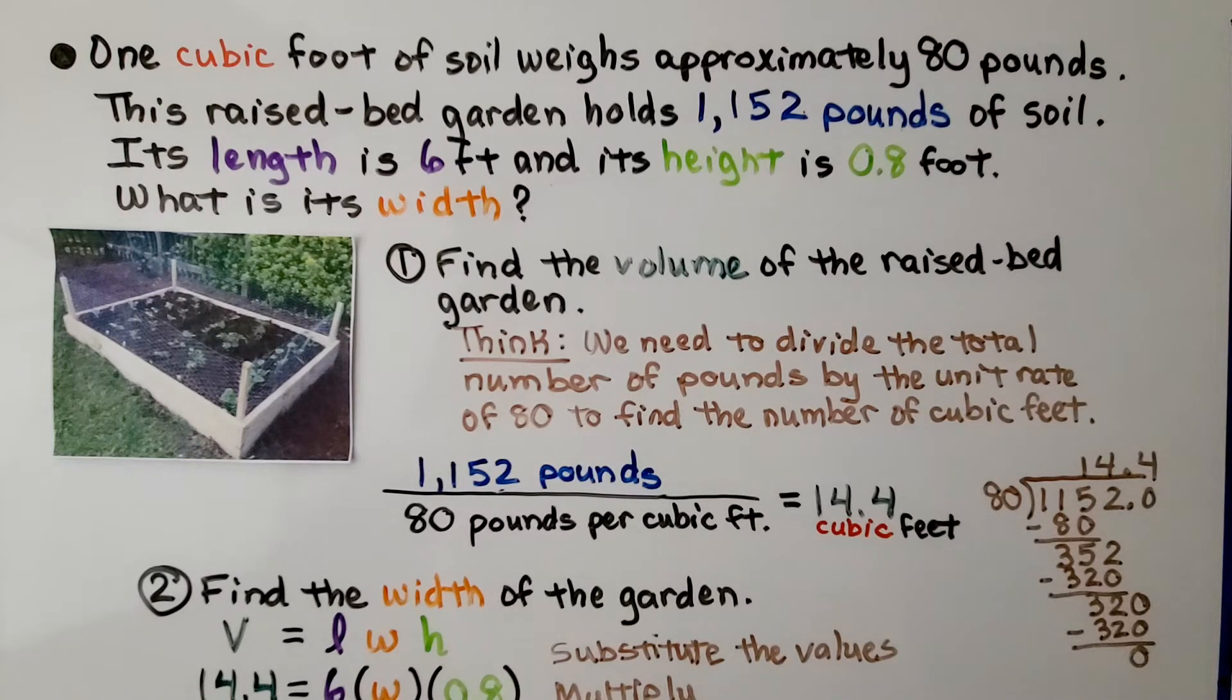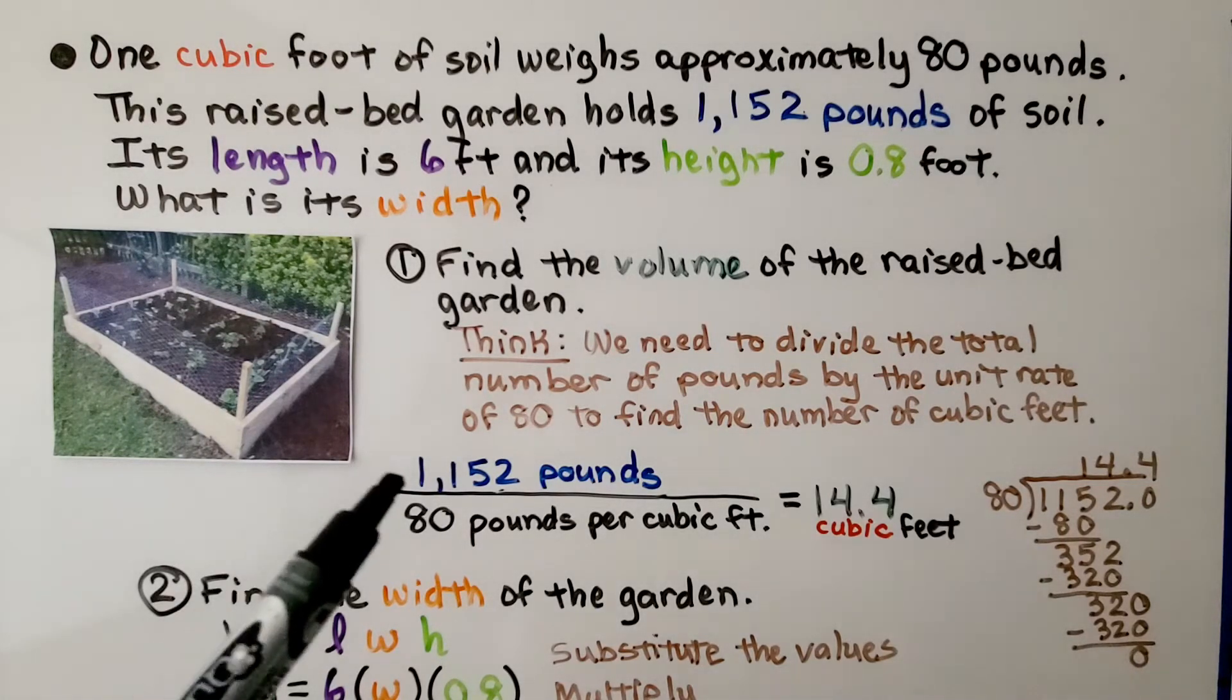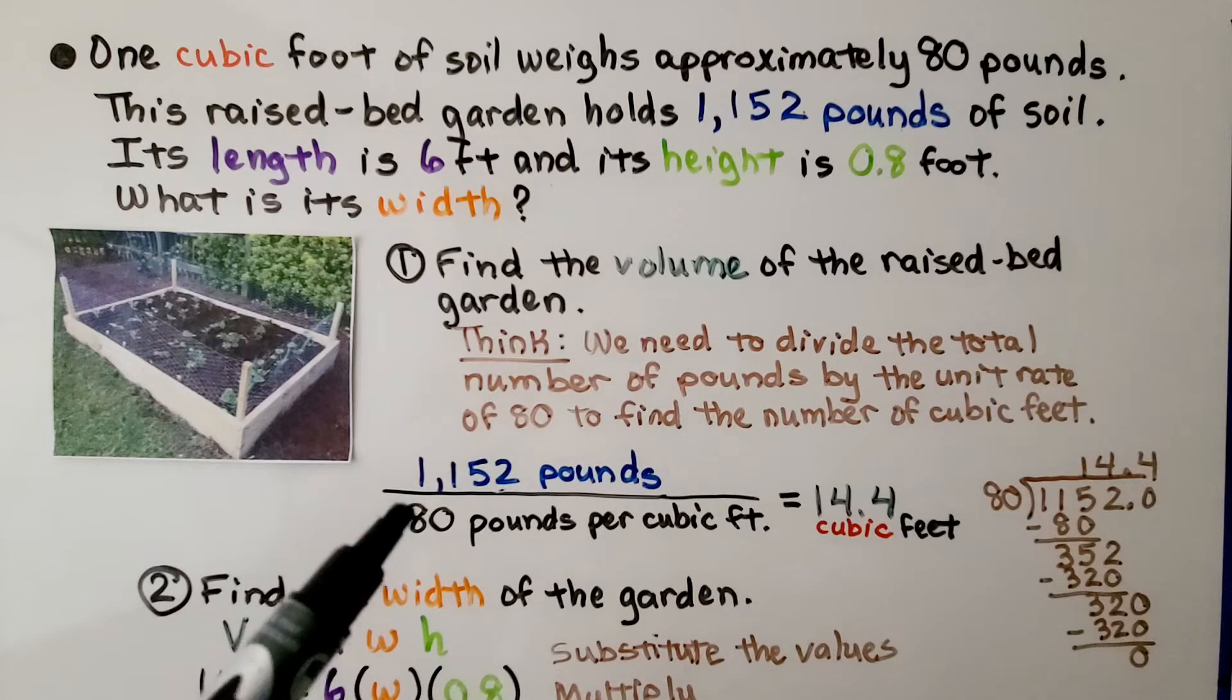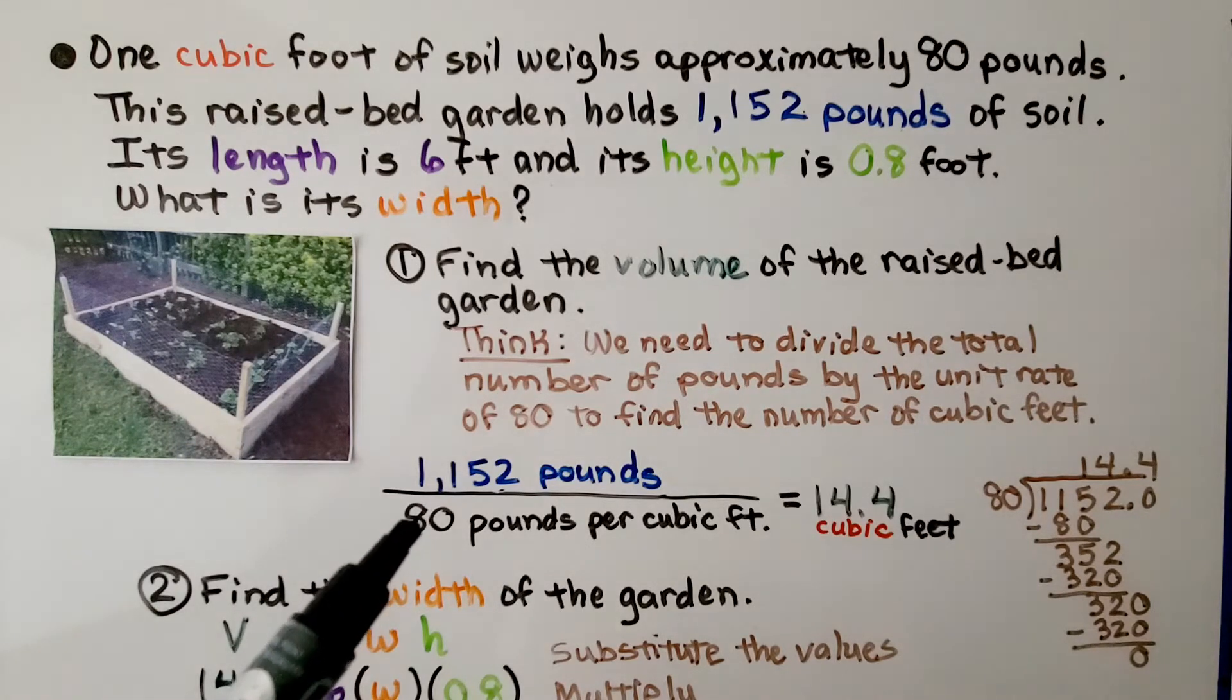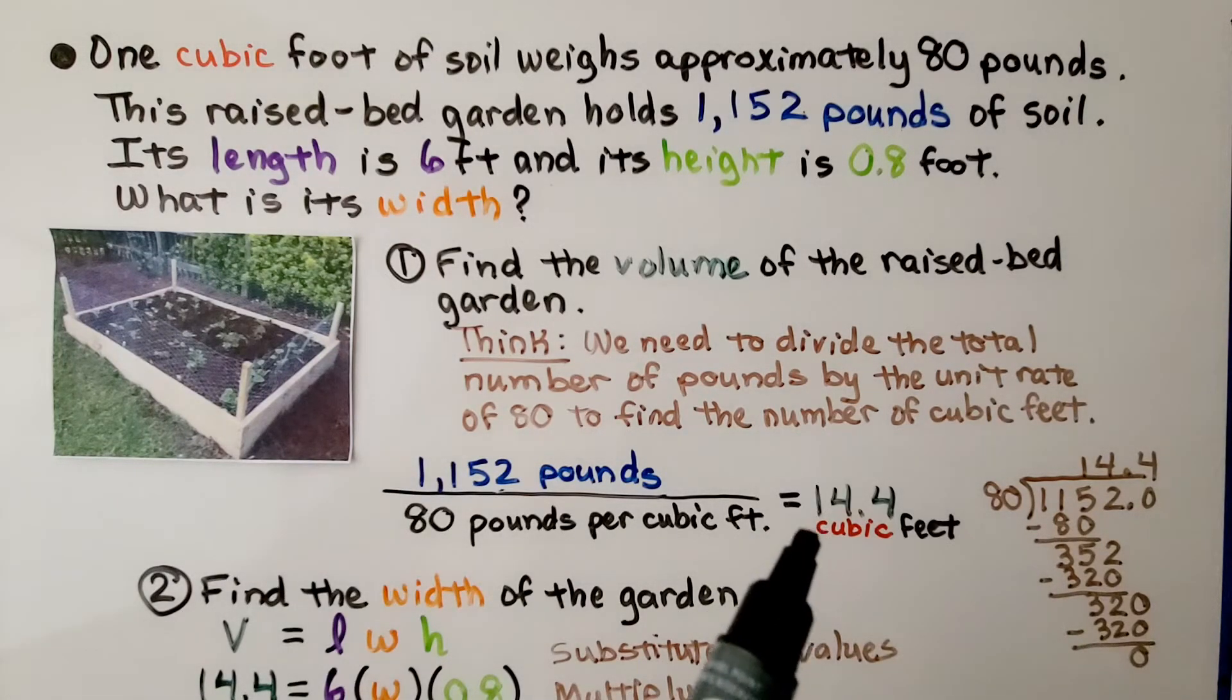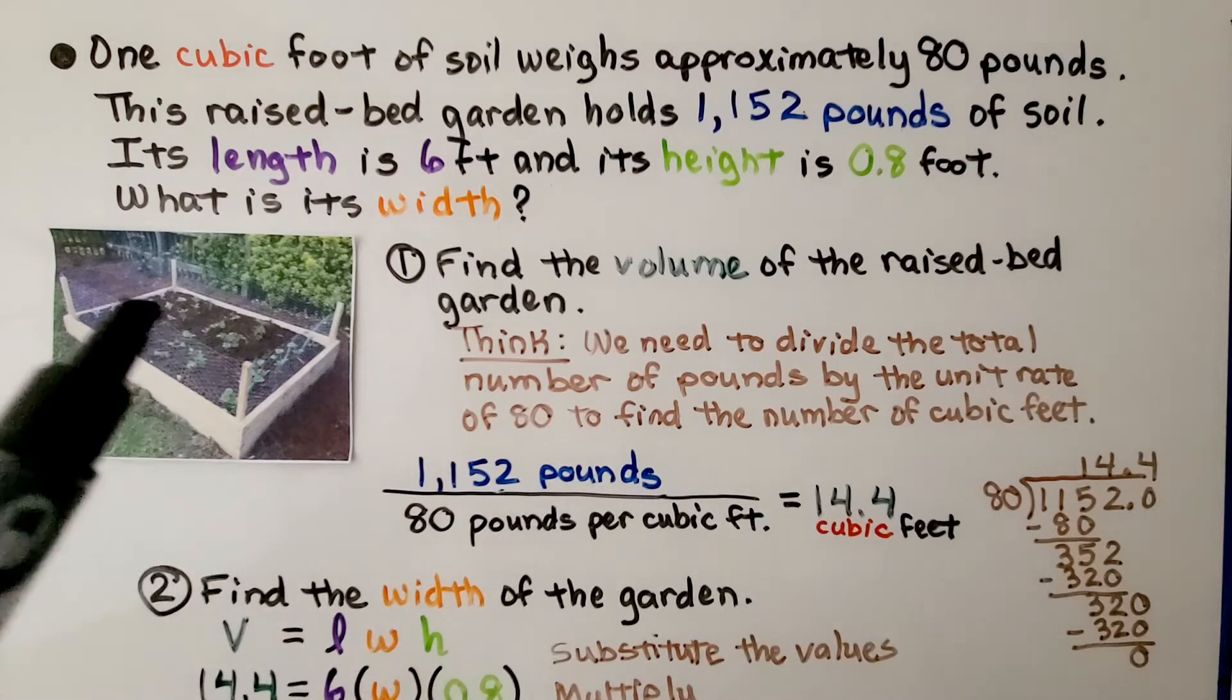The first thing we do is find the volume of the raised bed garden. We need to divide the total number of pounds by the unit rate of 80 to find the number of cubic feet. This is how many pounds per cubic feet. We find that it's 14.4 cubic feet of soil.